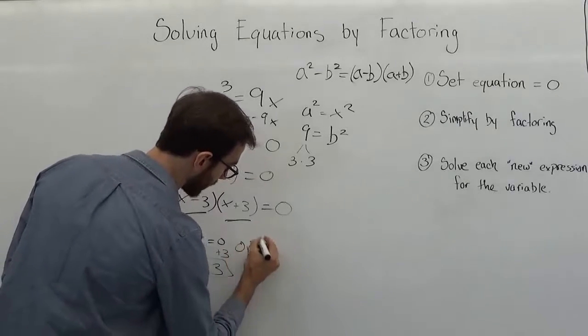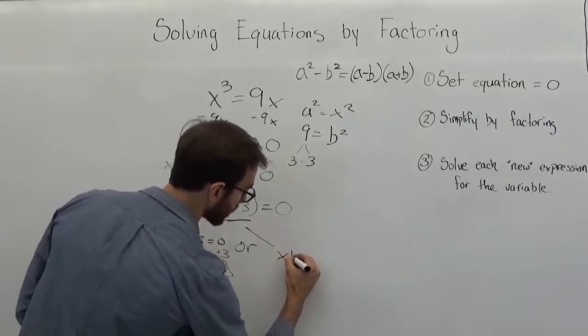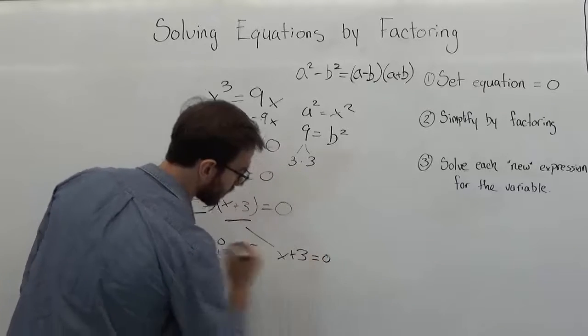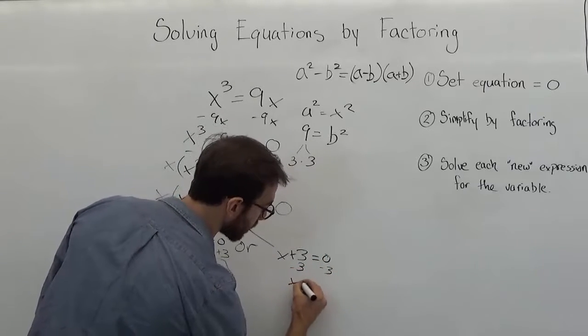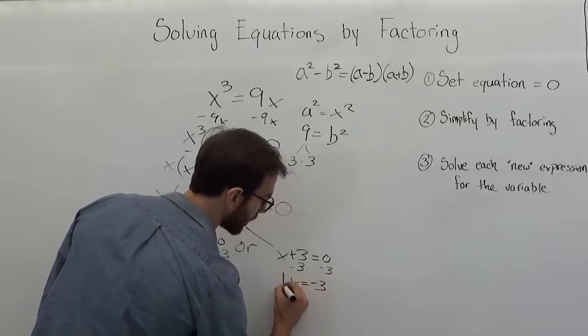Or, lastly, x plus 3 is equal to 0. Subtract a 3 from both sides. If x is equal to negative 3. So we have 3 possible solutions for this.